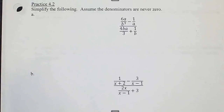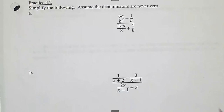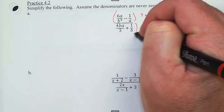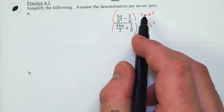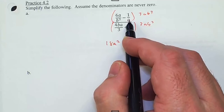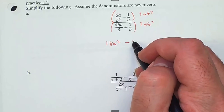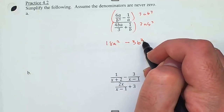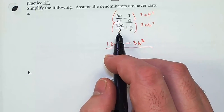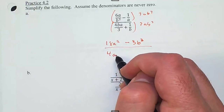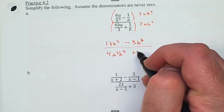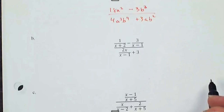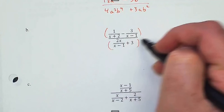Let's look at the practice problems. For the first one, multiply top and bottom by 3ab³. The b³ cancels on the first term giving 6a times 3a = 18a². On the second term the a's cancel leaving minus 3b³. On the bottom first term the 3's cancel giving 4a²b⁴, and on the last term one b reduces to give 3ab².